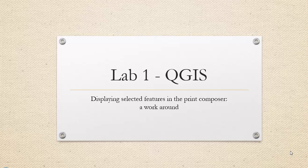Hi guys. So version 2.4 and beyond of QGIS apparently do not show the highlighted features from your map in the print composer. This is a design choice of the QGIS programmers. But what I'm going to show you in this video is a workaround — another way to display the features that you have selected in your map viewer and show them in the print composer.